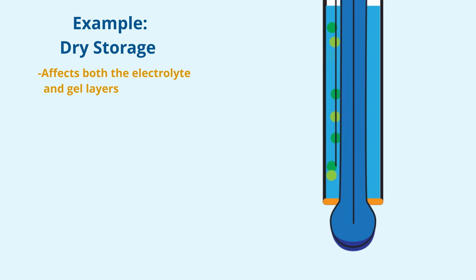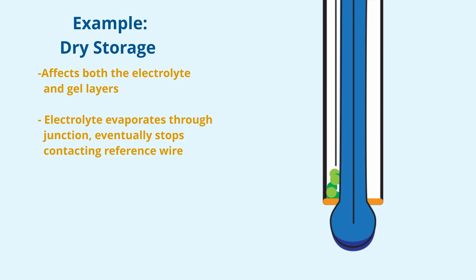As you can see, the reference electrolyte slowly evaporates through the junction. Eventually, the electrolyte no longer contacts the reference wire and the electrode stops functioning.